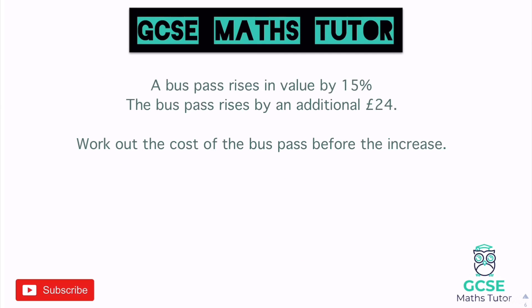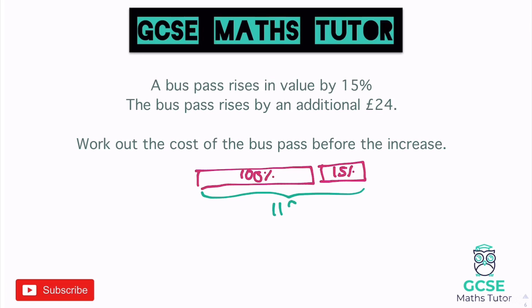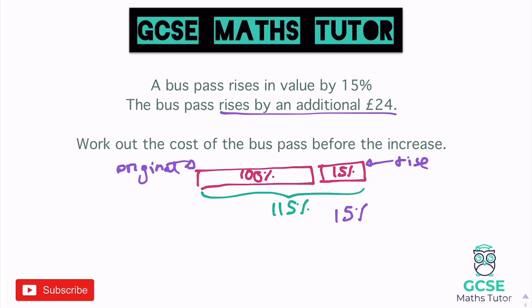One more with an increase in value: a bus pass rises in value by 15%, and the bus pass rises by an additional £24. Work out the cost of the bus pass before the increase. So we've got the original cost at 100%, and an additional 15% being added on, giving a combined total of 115%. We need to figure out: is it the 115% after the increase, or just the 15% increase? It says the bus pass rises by an additional £24 — so that's what it rises by, which is the 15% rise. So 15% equals £24.